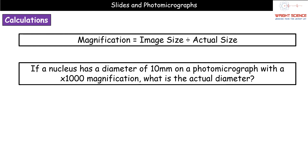The last thing we need to understand is the magnification calculation. The formula is: magnification = image size divided by actual size. I always get students to remember this using the triangle 'I AM' — I is image size, A is actual size, M is magnification. You can use the triangle method to rearrange, or rearrange mathematically — either way, you get the right formula for whatever the question asks.